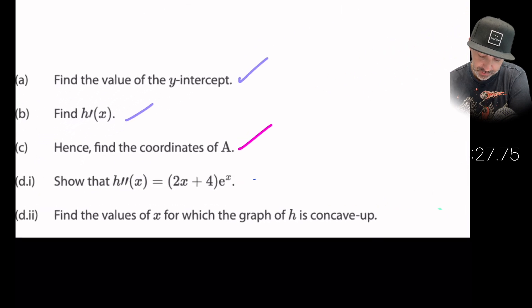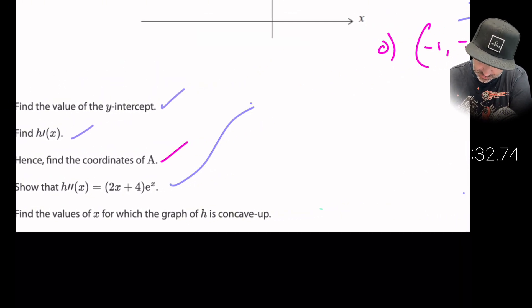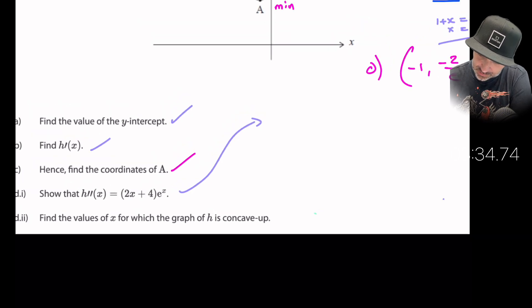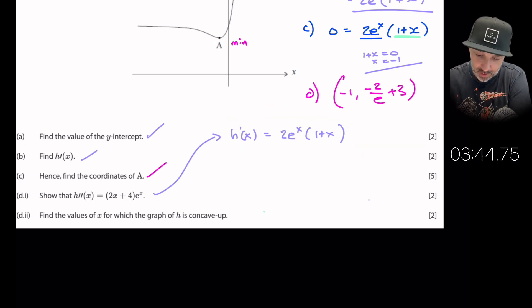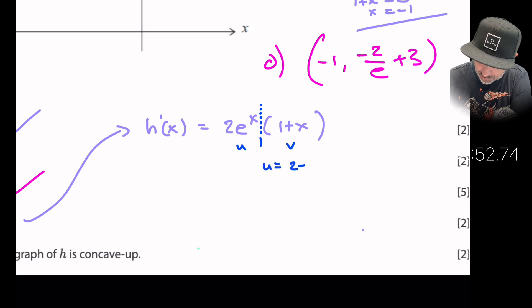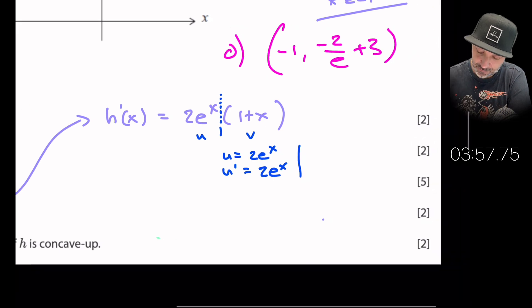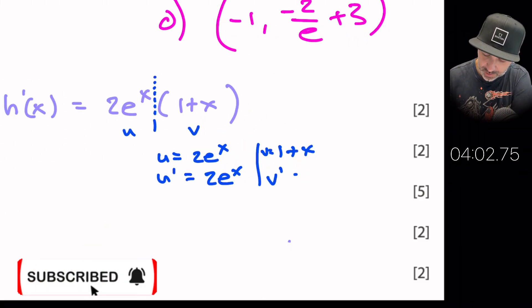It says show that the second derivative is equal to the following. What I'll do is I will answer this part of the question just here. So let's go ahead and write down what the first derivative was. The first derivative was equal to 2e^x(1 + x). So therefore then I'm going to have to apply a product rule again because I need to differentiate again. So let's just put u here, v here. u is equal to 2e^x, u prime is equal to 2e^x, and v is 1 + x and v prime is just one.